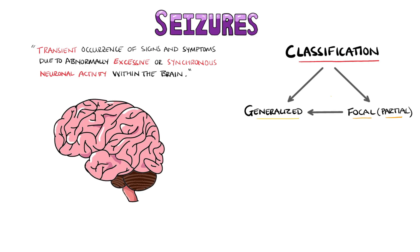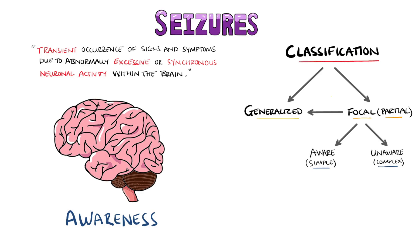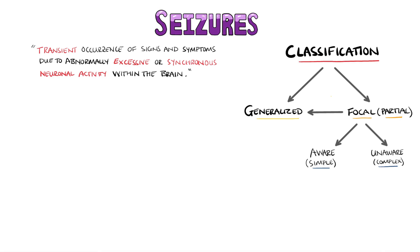The next factor is whether or not the patient keeps their awareness during the seizure. Generalised seizures are automatically considered to affect awareness, so this distinction only applies to focal seizures, meaning you either have focal aware, previously known as simple partial, or focal impaired awareness, previously complex partial.